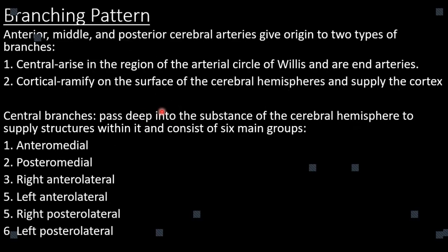What is the branching pattern of the Circle of Willis? The anterior, middle, and posterior cerebral arteries give origin to two types of branches: they can be either central or cortical. The central branches arise in the region of the arterial circle and are end arteries — they do not anastomose. The cortical branches, on the other hand, ramify the surface of the cerebral hemisphere, supplying the cerebral cortex, and in most cases some of them anastomose with each other.